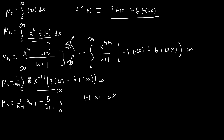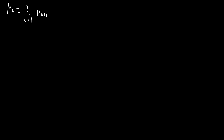To evaluate the remaining integral, we set u = 2x. Replacing everywhere 2x with u, we get du/2, f(u), and x^(n+1) becomes (u/2)^(n+1), dividing by 2^(n+1). So we're subtracting 6/(n+1) times — on the bottom we have 2^(n+2), which we can rewrite as 2^(n+1), making the numerator 3 — giving us μ(n+1) again. This comes from the substitution and converting x^(n+1) to u^(n+1)/2^(n+1).